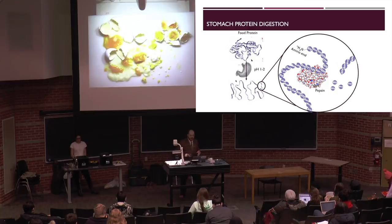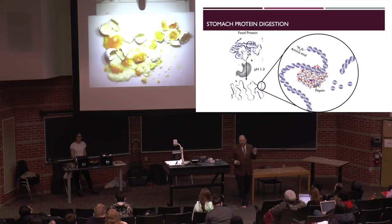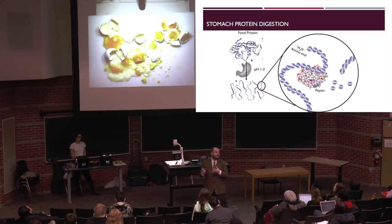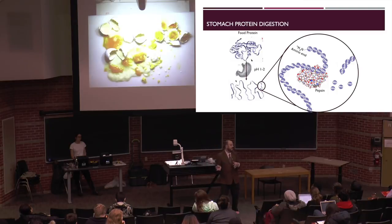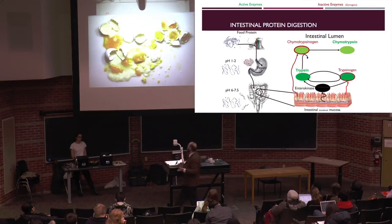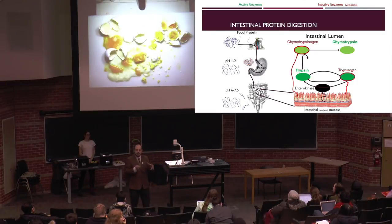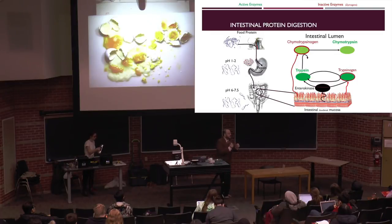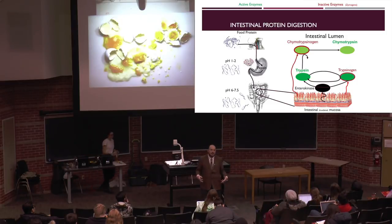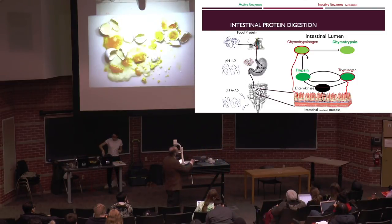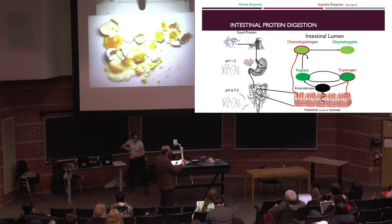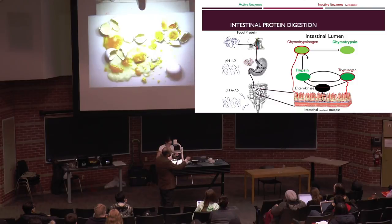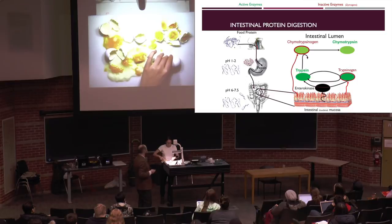When we talk about the digestibility of proteins, pH plays an important role through denaturation, which happens mainly in the stomach. Once proteins reach the intestinal phase, our main proteolytic enzymes are secreted: trypsinogen and chymotrypsinogen. These are called zymogens — inactive precursors to active enzymes — because we don't want to break down proteins in our own cells. Enterokinase converts trypsinogen to trypsin, which then self-activates or activates chymotrypsin, and both can break down proteins.